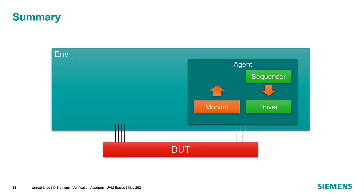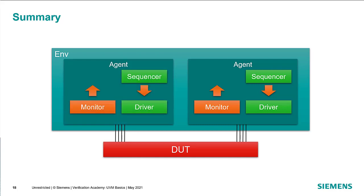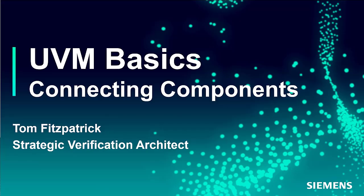To summarize: in our environment, which is itself a UVM component, we have other kinds of components. The agent is a typical grouping of sequencer, driver, and monitor, which are other types of components. In the build phase we instantiate child components; in the connect phase we connect them; and in run phase that's where everything interesting happens in the test. You can also have multiple instances of agents — agents are typically protocol-specific, and you have one agent for each interface to your DUT. In this session we've seen how to instantiate and connect components in UVM, and the same mechanisms will apply to other types of UVM components in future sessions.